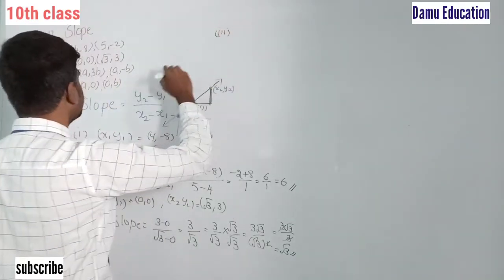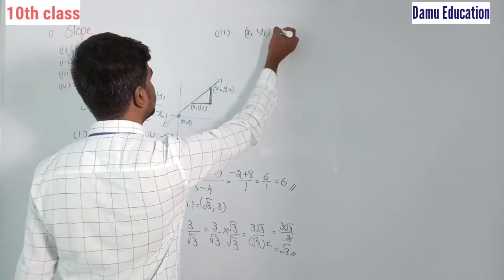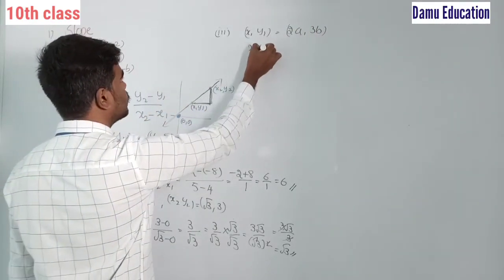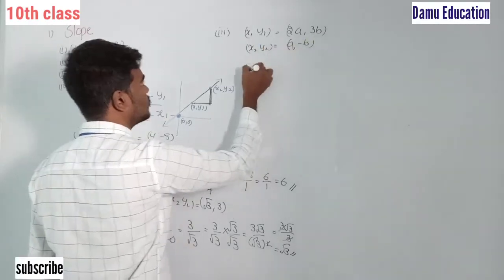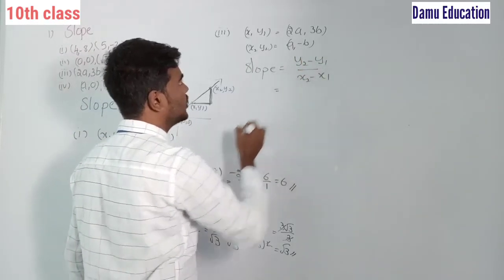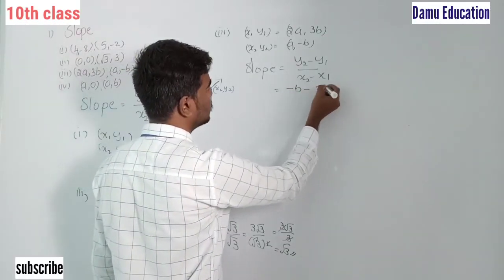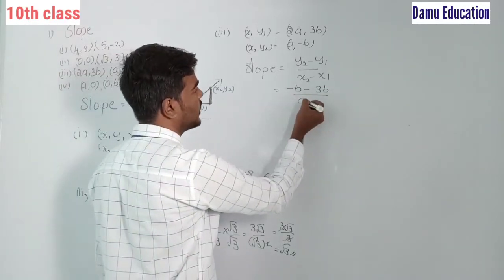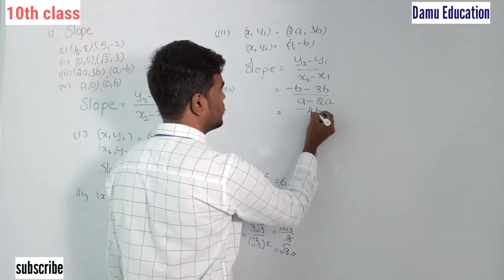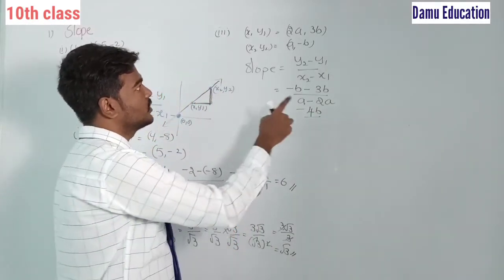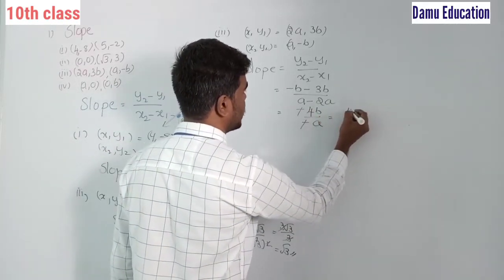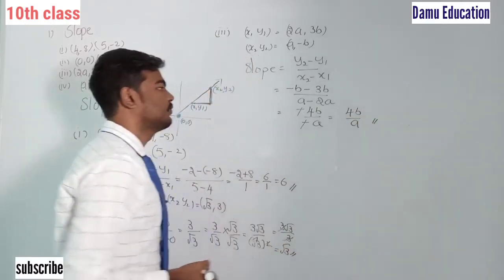For the third example, x1, y1 = (2a, 3b) and x2, y2 = (a, -b). Slope = (y2 - y1) / (x2 - x1) = (-b - 3b) / (a - 2a) = -4b / (-a). The negatives cancel, giving us -4b/a. So the slope for the third example is -4b/a.